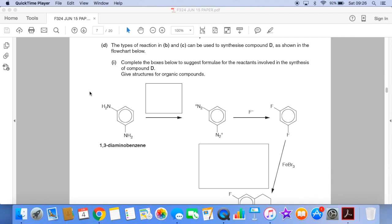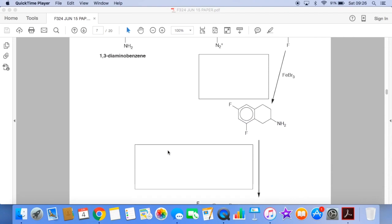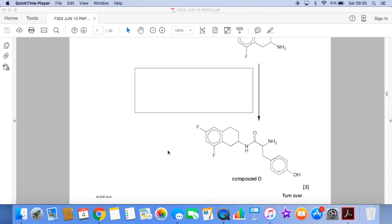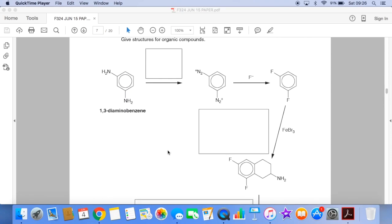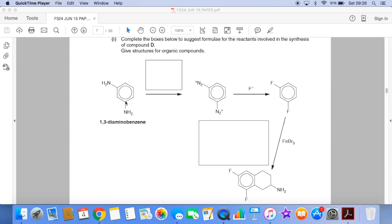So we've got to complete the boxes in the flowchart to suggest formulae for the reactants involved in the synthesis of compound D, which is just under here. We don't need that just yet. So if I go back here, have a look at the first question. How do you change this chemical into this chemical here?